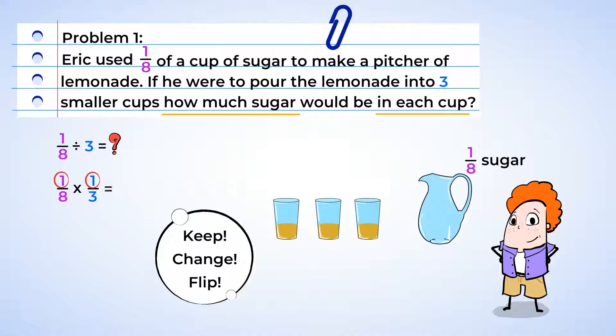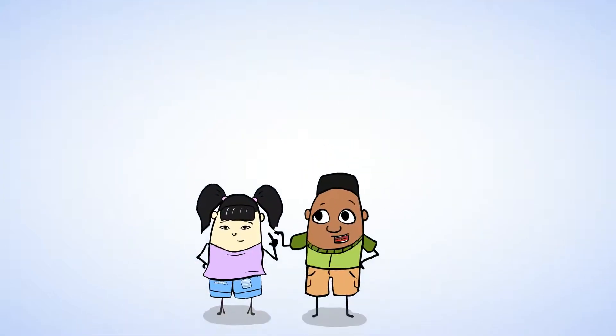One times one, one. Eight multiplied by three is 24. So each small cup will have one twenty-fourth of a cup of sugar in it. Sweet.